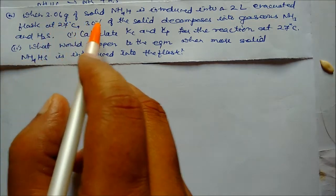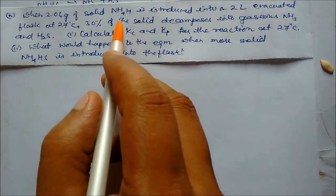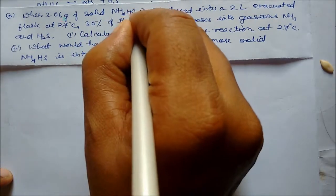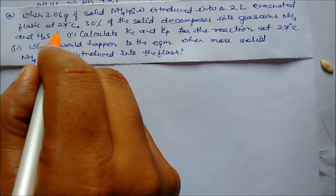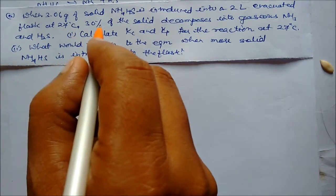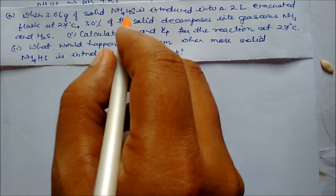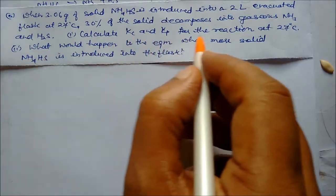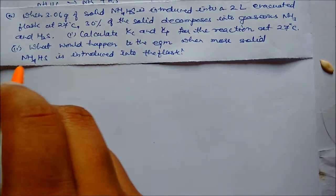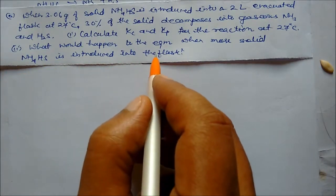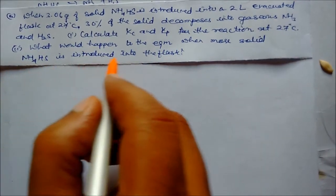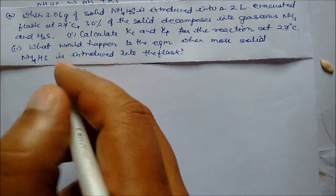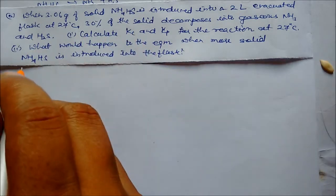Next problem: 3.06 grams of solid NH4HS is introduced into a 2-liter evacuated flask at 27 degrees centigrade. 30 percent of the solid decomposes to gaseous ammonia and H2S. We need to find Kc and Kp. For the second part, if more solid is added, since pure solid is not involved in Kc or Kp, nothing will happen to the equilibrium.